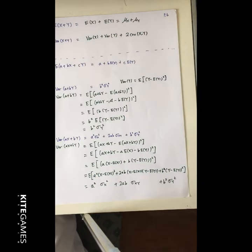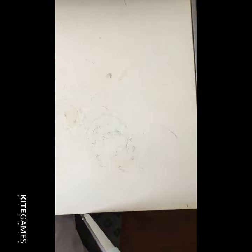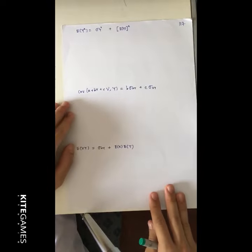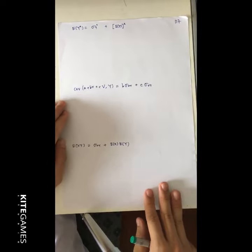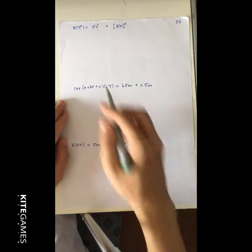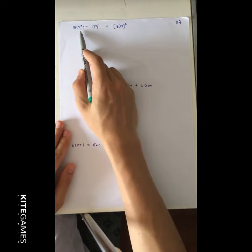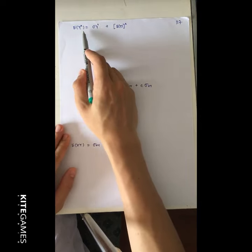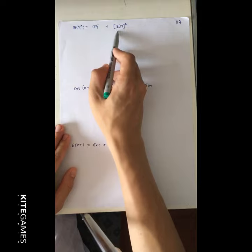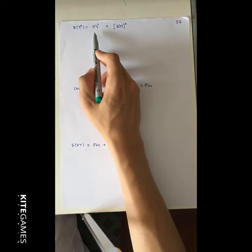Next, the relation: E[y²] is not just (E[y])². You still need to add the variance of y.